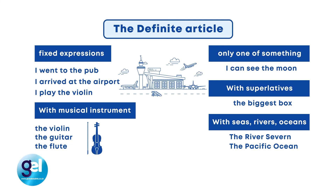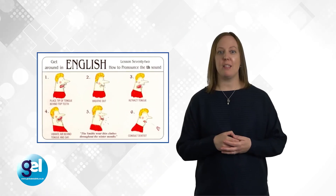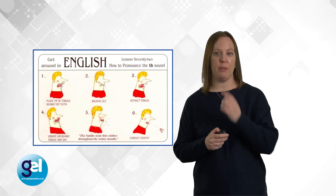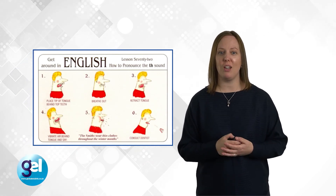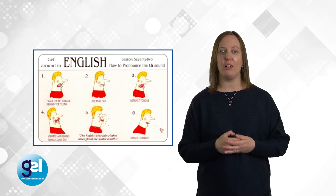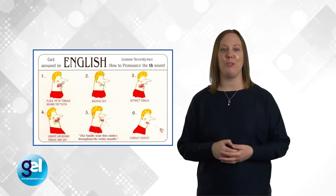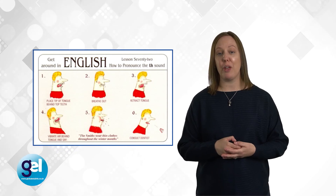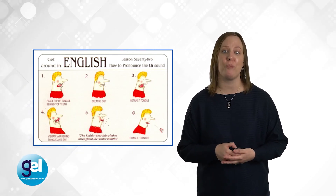The definite article has many rules for when it should be used — exposure is important for students so they have the opportunity to practise. Many languages such as Chinese, Russian and Polish do not have articles, so it's really tricky for learners to understand how to use them, including both the definite and indefinite article in English. For pronunciation: place the tip of the tongue behind your top teeth, breathe out, retract your tongue, vibrate the air behind your tongue and say — the Smiths wear thin clothes throughout the winter months.